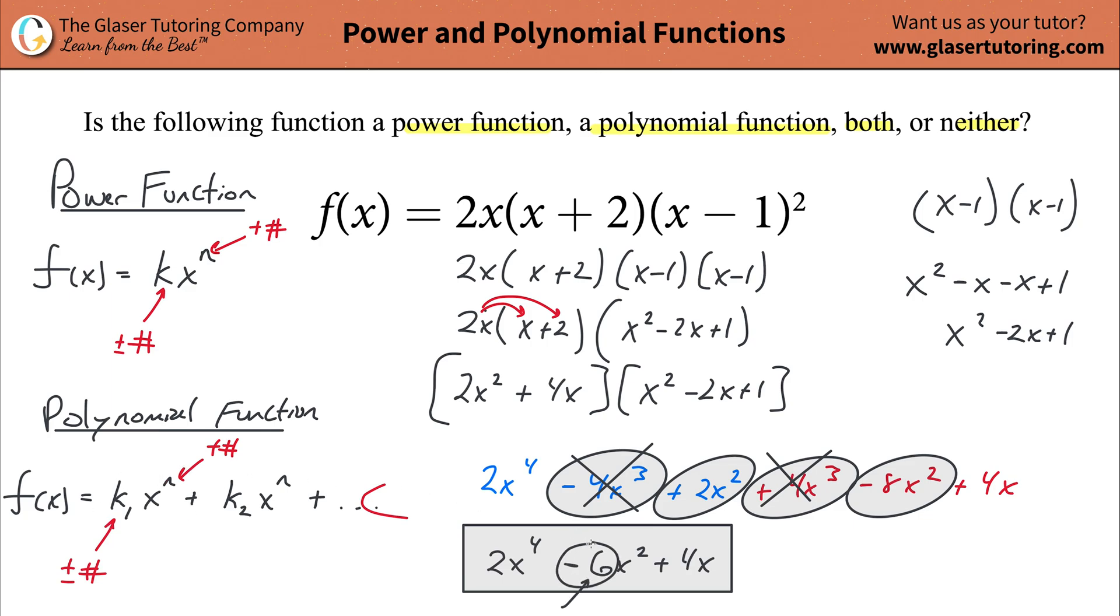This one now is a negative 6, that's the coefficient there. It has a variable, then it has a power. So that matches, that would be another term. Remember that it could be added. Whenever you have in this formula added, it could also be subtracted. That doesn't make a difference. And then you have another term out here. That's the coefficient, that's the variable. Then it doesn't look like it has a superscript or an exponent there, but there is, it's a 1. So that does follow, again, the pattern for the polynomial.